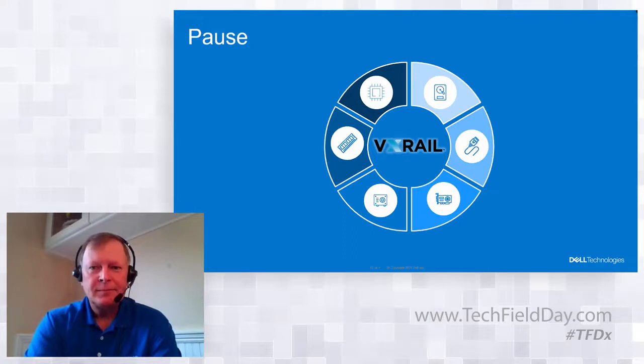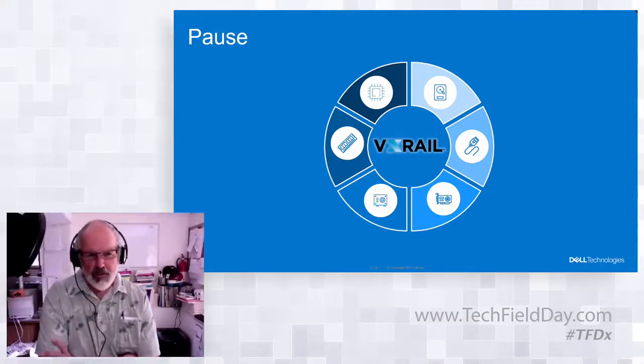Does the dynamic node qualify as a vSAN-ready node? I'm trying to understand because the purpose of VxRail is as a purpose-built solution for vSAN HCI, and now we're going out to primary storage again, which in my mind is not HCI.